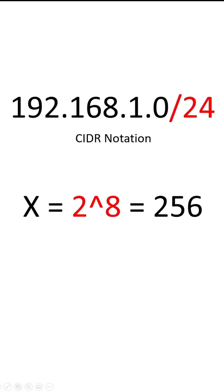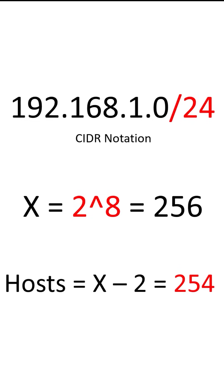In order to find the number of hosts, we can set x equal to two to the power of the off bits. In this case we have eight off bits, so we have two to the eighth power, which equals 256. Once we know x, we subtract two for the broadcast ID and the network ID, which are reserved. That means we can have 254 hosts in a slash 24 network.